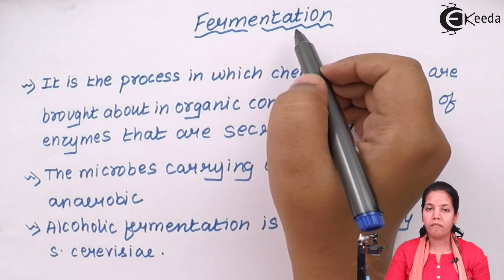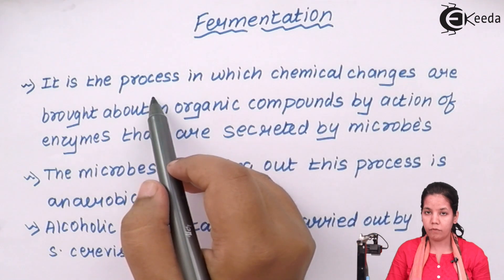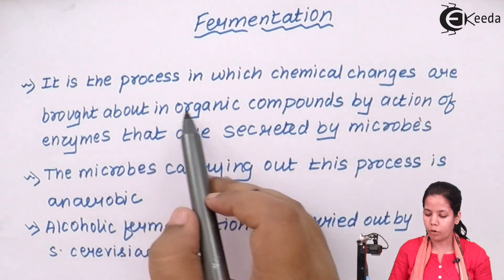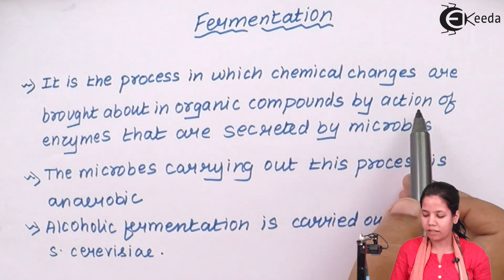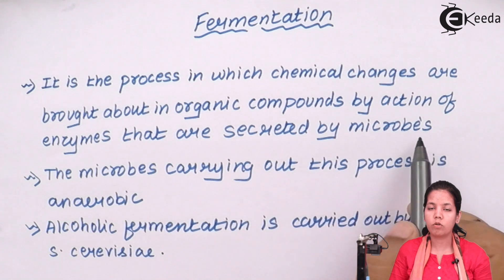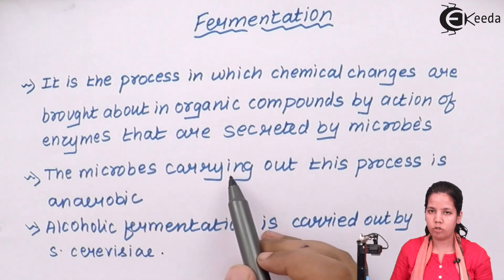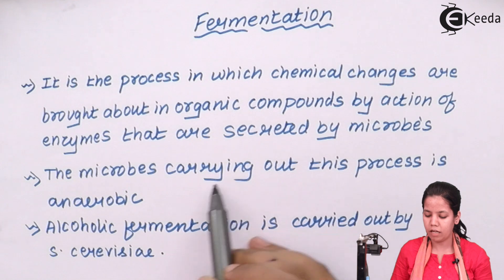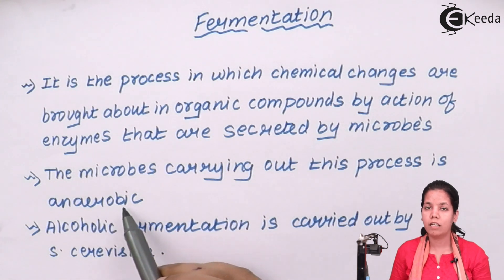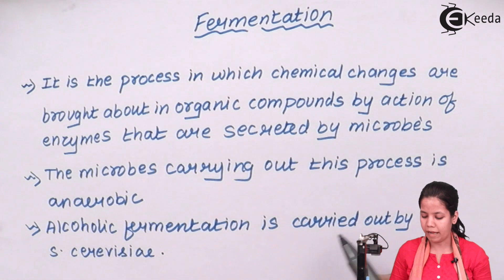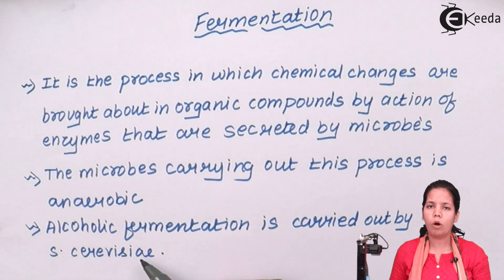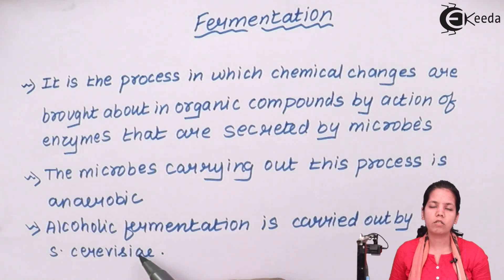Fermentation is a process in which chemical changes are brought about in organic compounds of carbohydrates, proteins, and lipids by the action of enzymes secreted by microbial sources. The microbes most commonly used for fermentation are anaerobic — they do not require oxygen. Alcoholic fermentation is carried out by Saccharomyces cerevisiae, commonly called yeast, which is one of the most widely used organisms in fermentation.